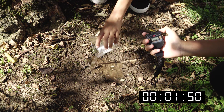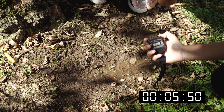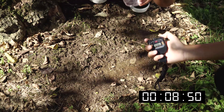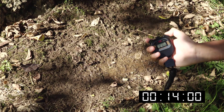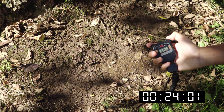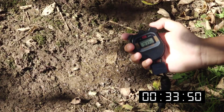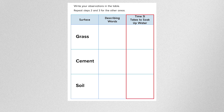Follow the same steps as you did with the grass and cement. Have your teacher refill the cup with water. Make sure your timer is set at zero. Start the timer as soon as the water is poured and stop it once the water has been soaked up. Observe what happens when the water is poured on the soil. Did the soil soak up the water? Record the time in the data table. When you're ready, select Continue.